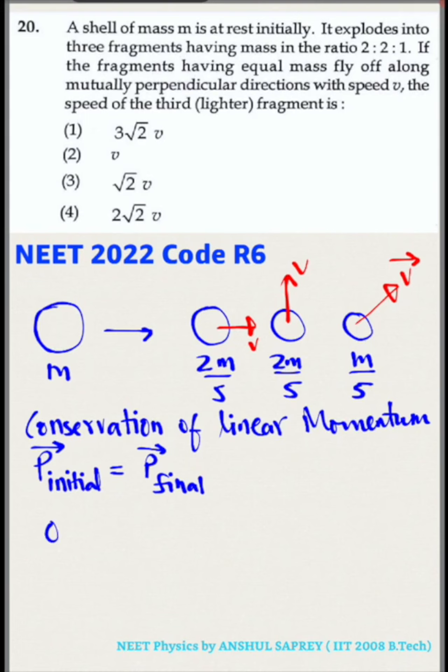Since initially the shell was at rest, so initial momentum is zero. Final momentum is 2m/5 v î + 2m/5 v ĵ + m/5 v vector. If we simplify this, let's take m/5 common, so 0 vector is equal to m/5 (2v î + 2v ĵ + v vector).